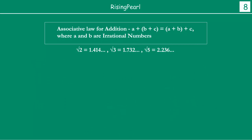Now let us take a look at the next property which is the associative law for addition. If A, B and C are irrational numbers, such that A plus B plus C, then that must be equal to within bracket A plus B, bracket close, plus C. This is called the associative law. What this property is telling us is that the associative law for addition actually applies to irrational numbers.